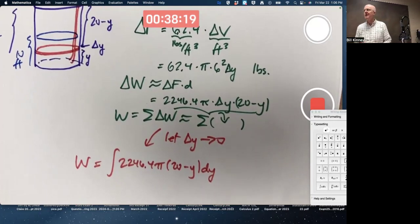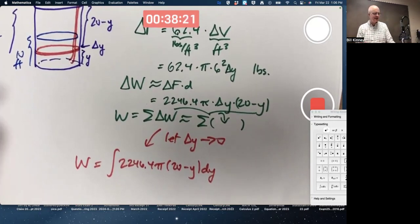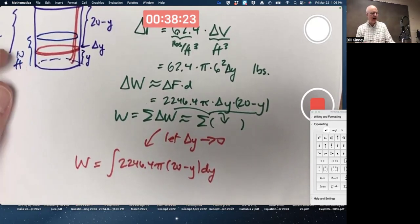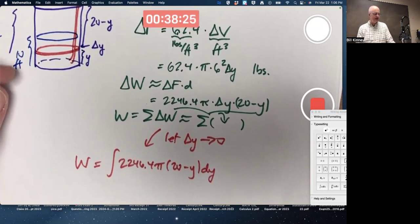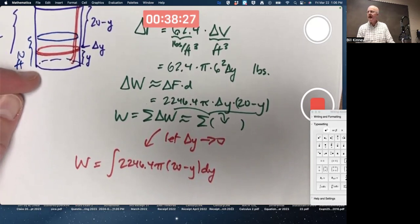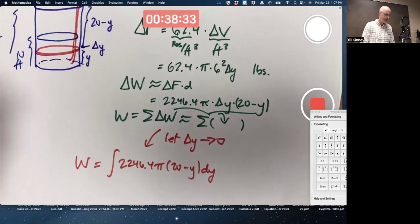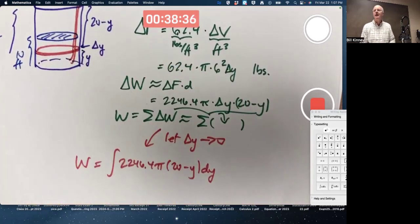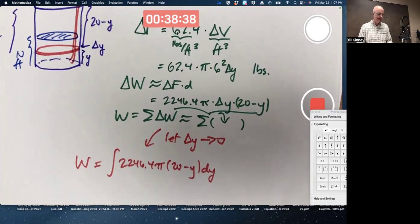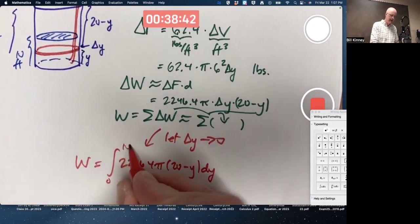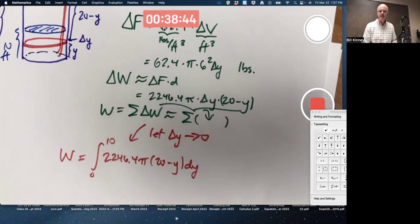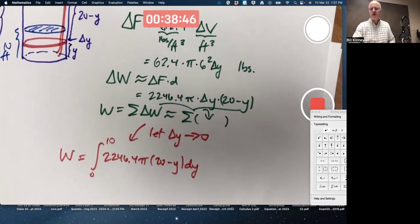What are the limits of integration? Look at the picture. y is the height. The bottom of the tank, y is zero. At the top, not of the tank, but of the water level, just the top of the water right here, y is 10. So, y goes from zero to 10. This will give us the answer in foot-pounds for the work done.